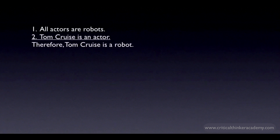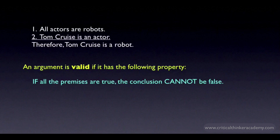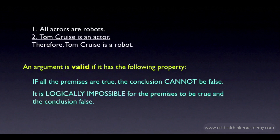Here is the standard definition of a valid argument. An argument is valid if it has the following hypothetical or conditional property: if all the premises are true, then the conclusion cannot be false. In this case, we know the first premise is actually false — not all actors are robots — but the argument is still valid because if the premises were true, it would be impossible for the conclusion to be false. In a hypothetical world where all actors are robots and Tom Cruise is an actor, it's logically impossible for Tom Cruise not to be a robot.